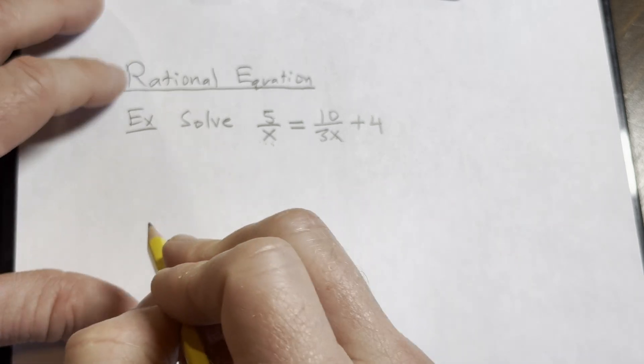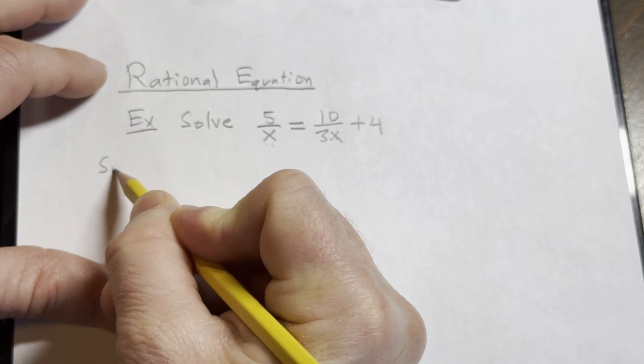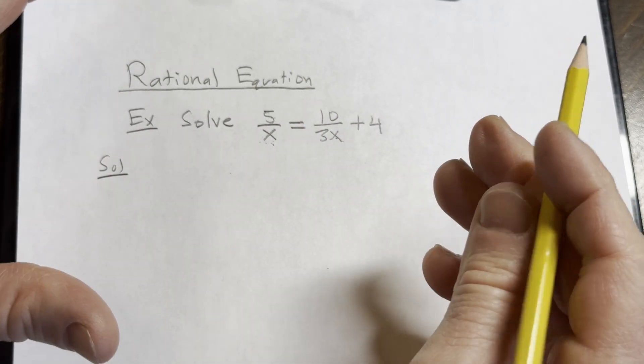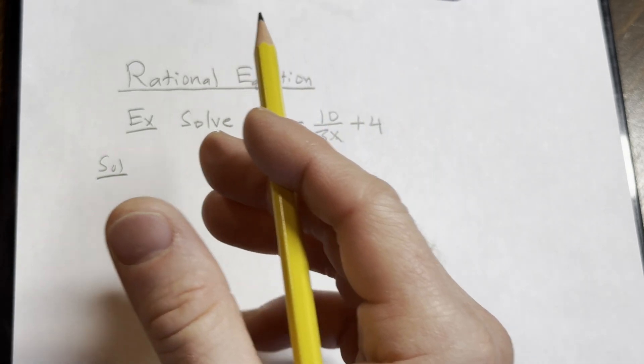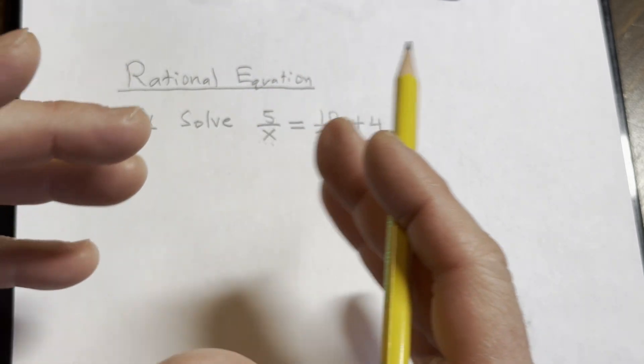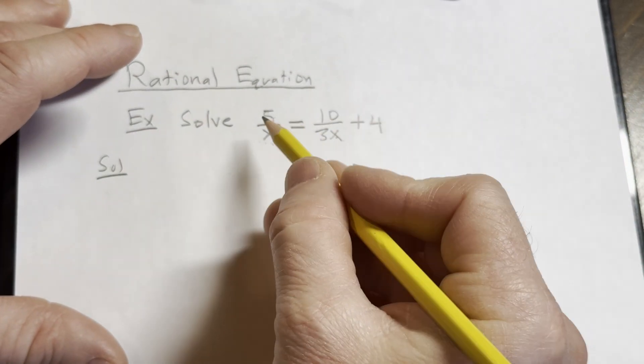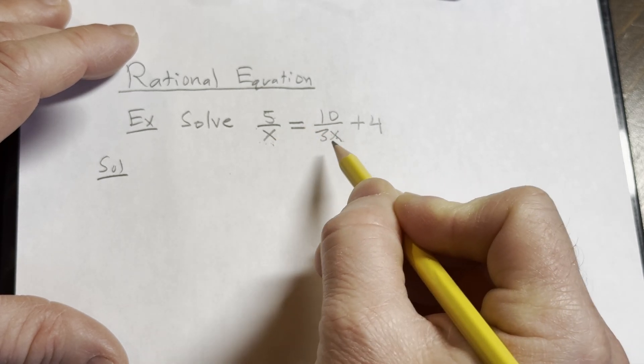So keeping that in mind, we're going to go through the solution. The way I think about it is we're trying to find x, right? Our final answer needs to be x equals some number. So we need to get rid of all of these fractions.